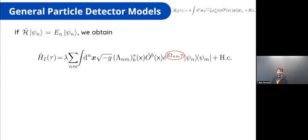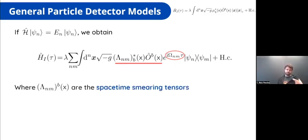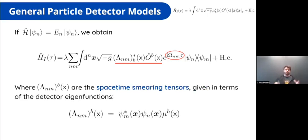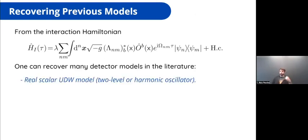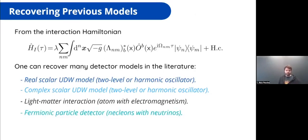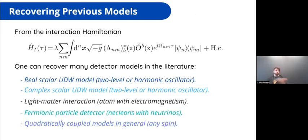This starts to look more familiar. We have the energy gap, the e^{iωτ} term very characteristic of particle detectors — where ω is the difference between energy levels — and a contraction between a spacetime smearing tensor and the operator we're coupling to. The spacetime smearing tensor is given by the product of the wave functions with the generalized monopole tensor field. Using this, you can recover many particle detector models in the literature: the real scalar UDW, complex scalar UDW, light-matter interaction, fermionic particle detectors, quadratically coupled models, and even the model coupling to linearized quantum gravity.